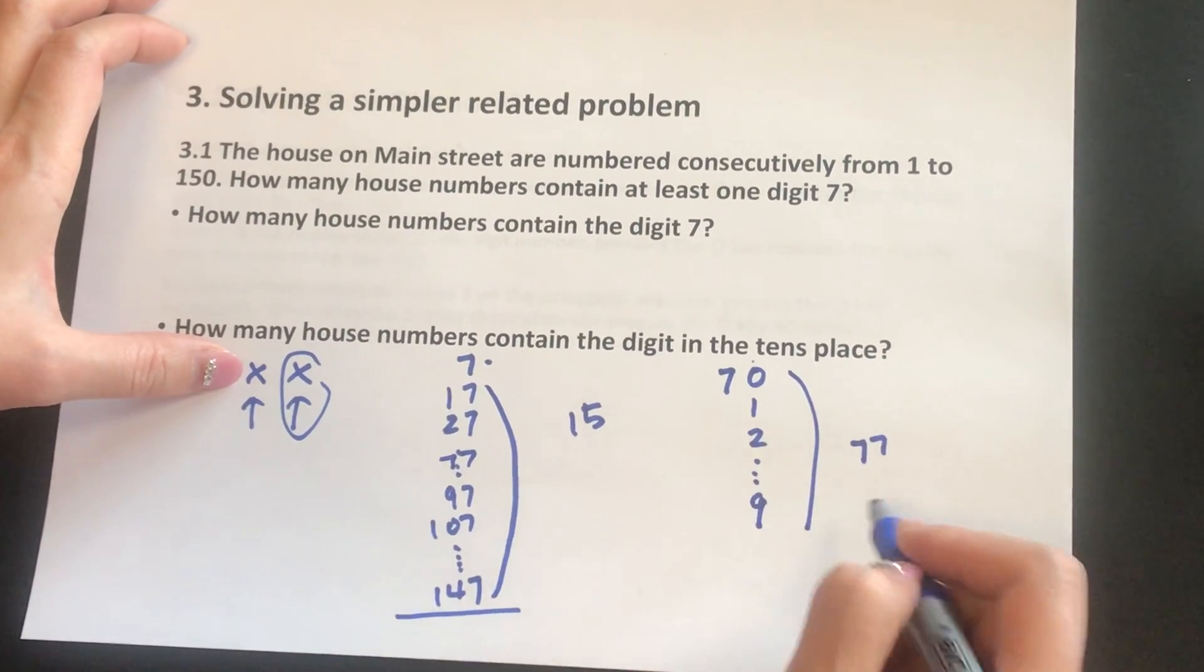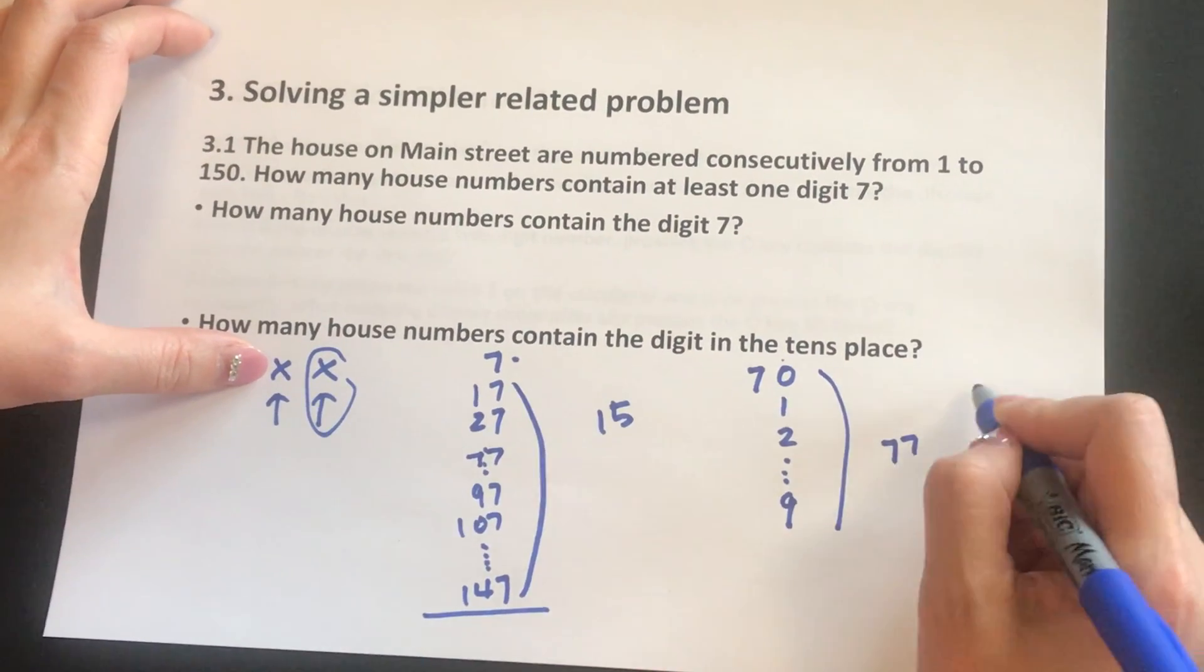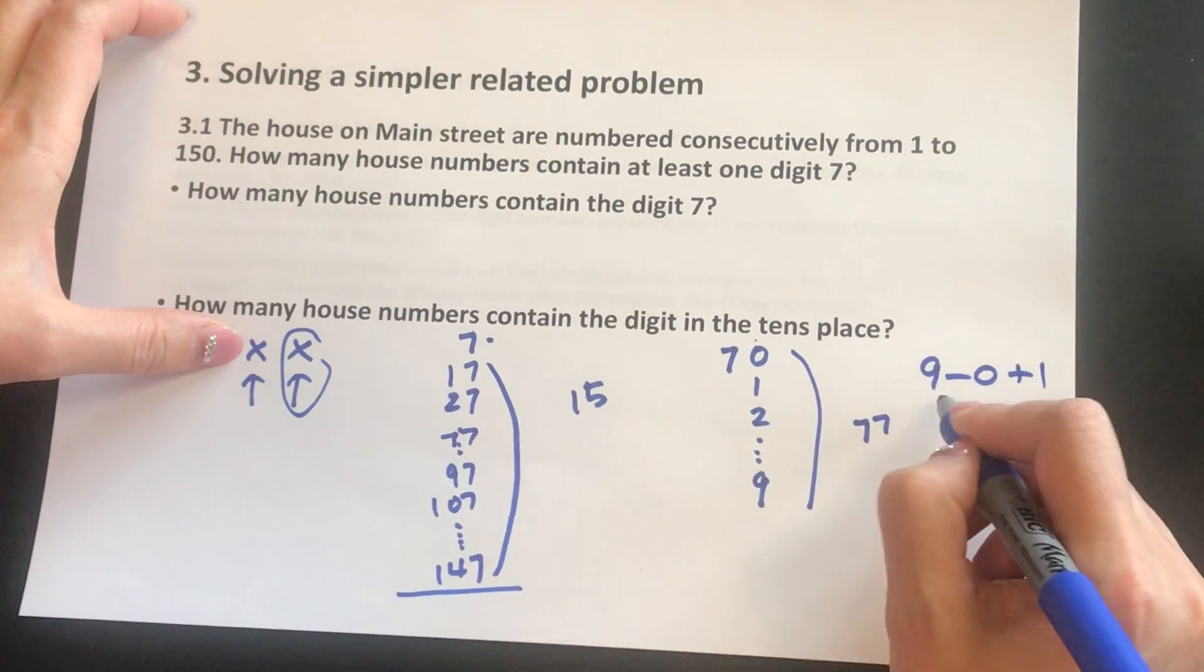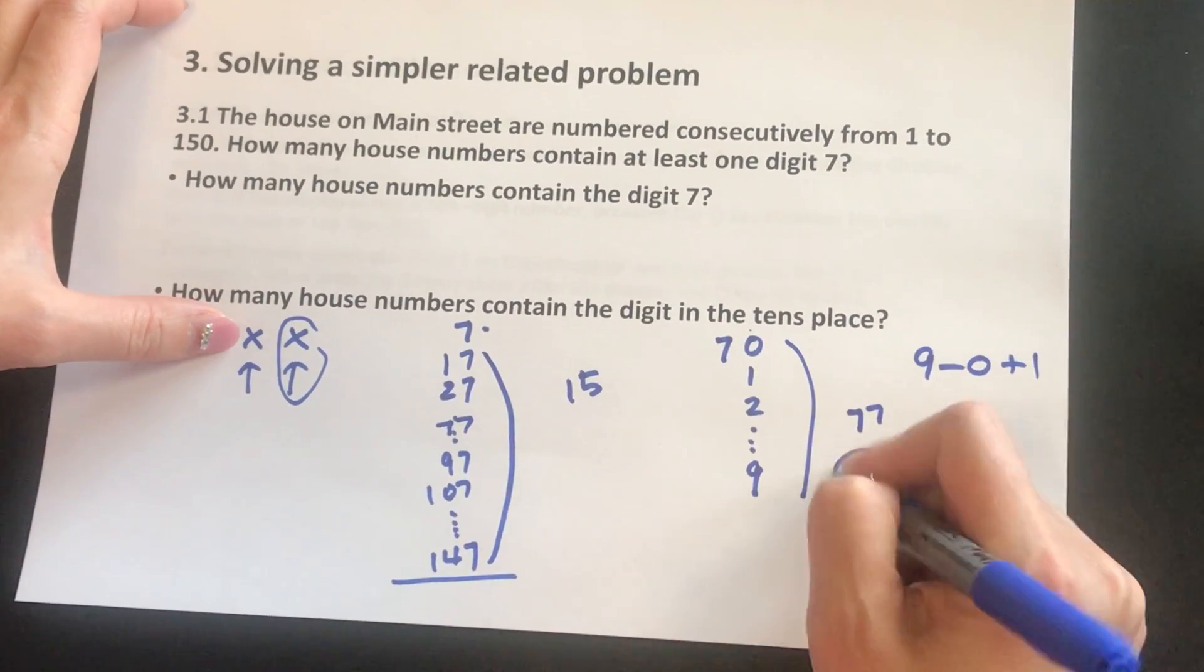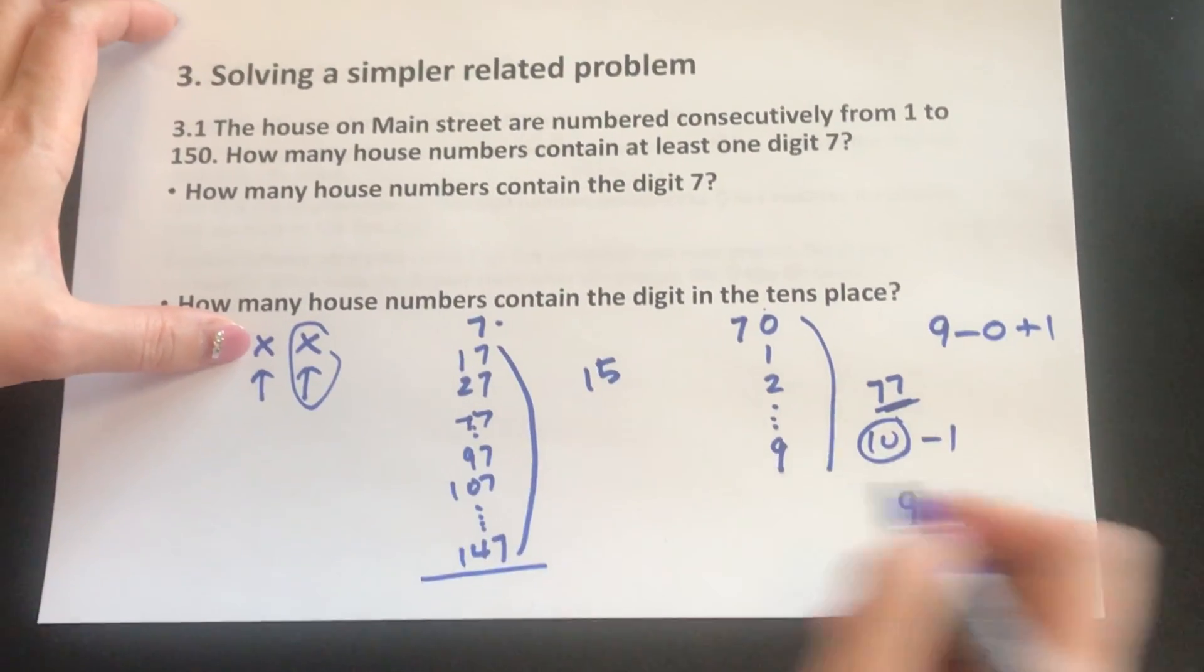So the total number here has to subtract 1. So from 0 to 9, students know that we have the max number minus the minimum plus 1. So in here, total there are 10 numbers, right? And we need to subtract 77. So here is 9 numbers.